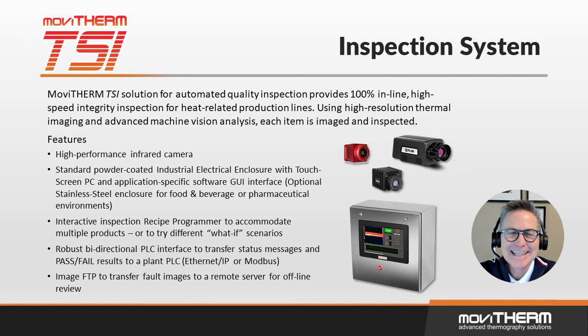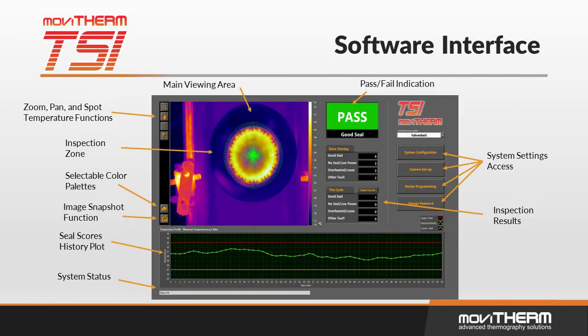This is an example view of the TSI user interface. The bright yellow ring in the thermal image indicates a good seal, as indicated by the green paths in the indication window.